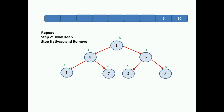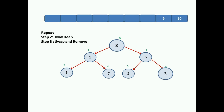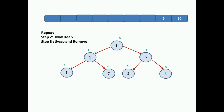Again, repeat the steps. Starting from the last sub-tree: 6, 2, and 3 — already a max heap. Next tree: 8, 5, and 7 — already a max heap. The root tree has 1 as parent with children 8 and 6 — not a max heap. We swap root with largest child: 1 and 8 get swapped. Now step 3: swap root node with the last node — 8 and 3 get swapped. Remove the last node; 8 is now sorted.